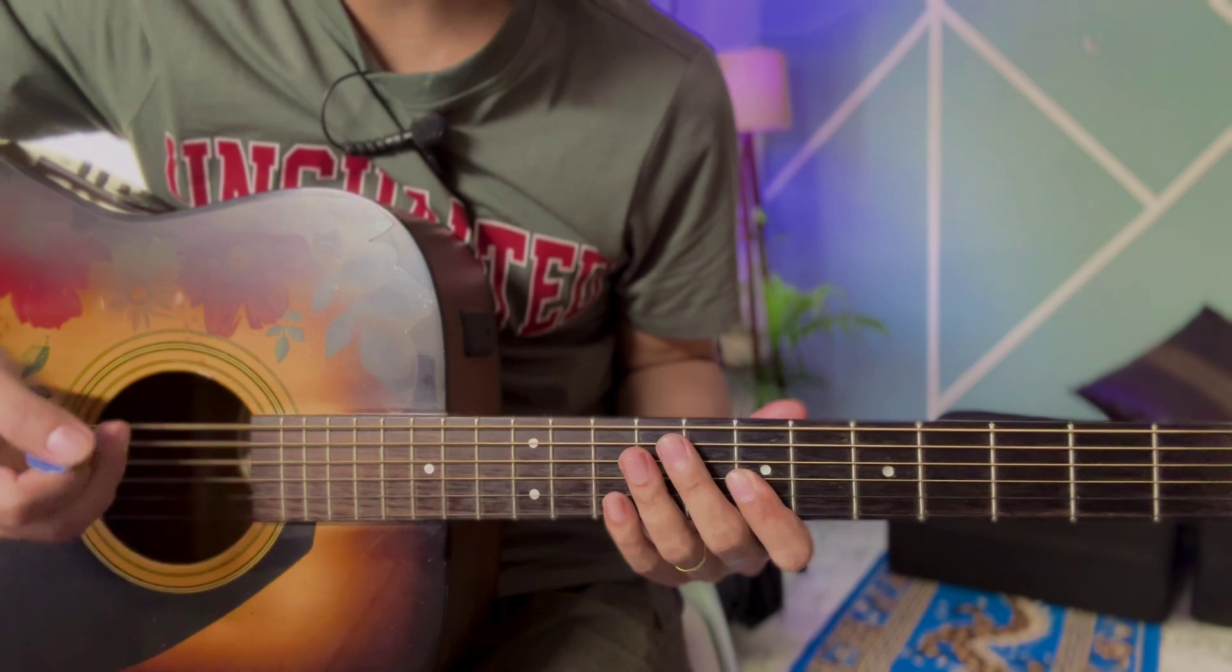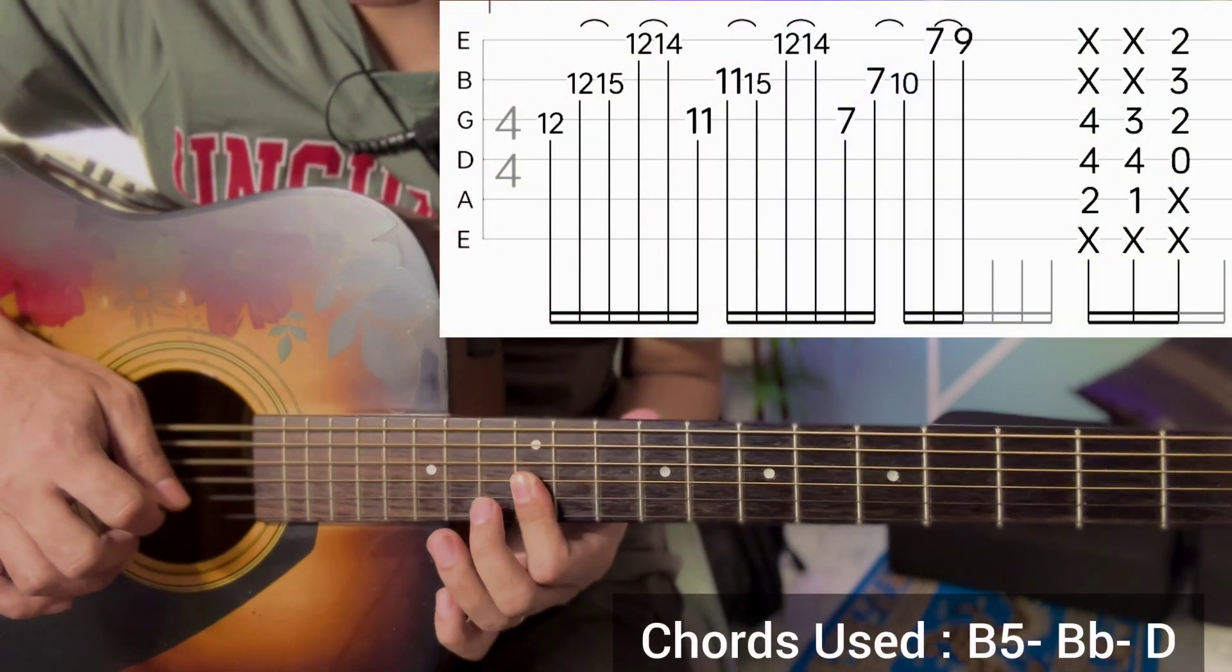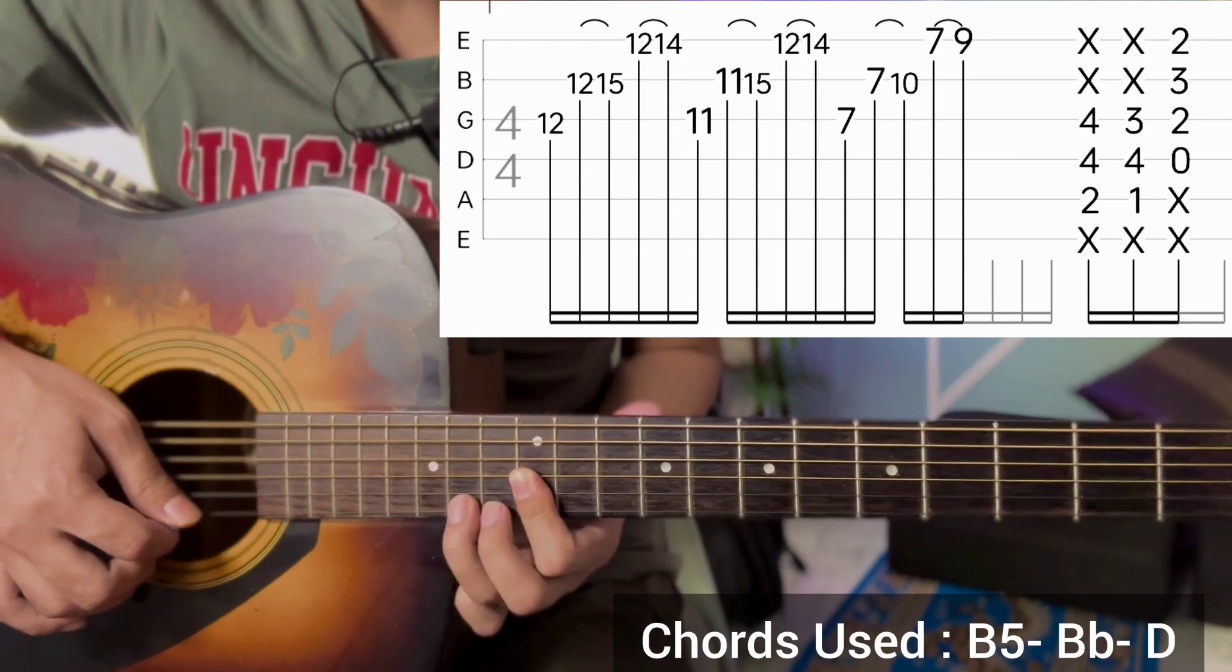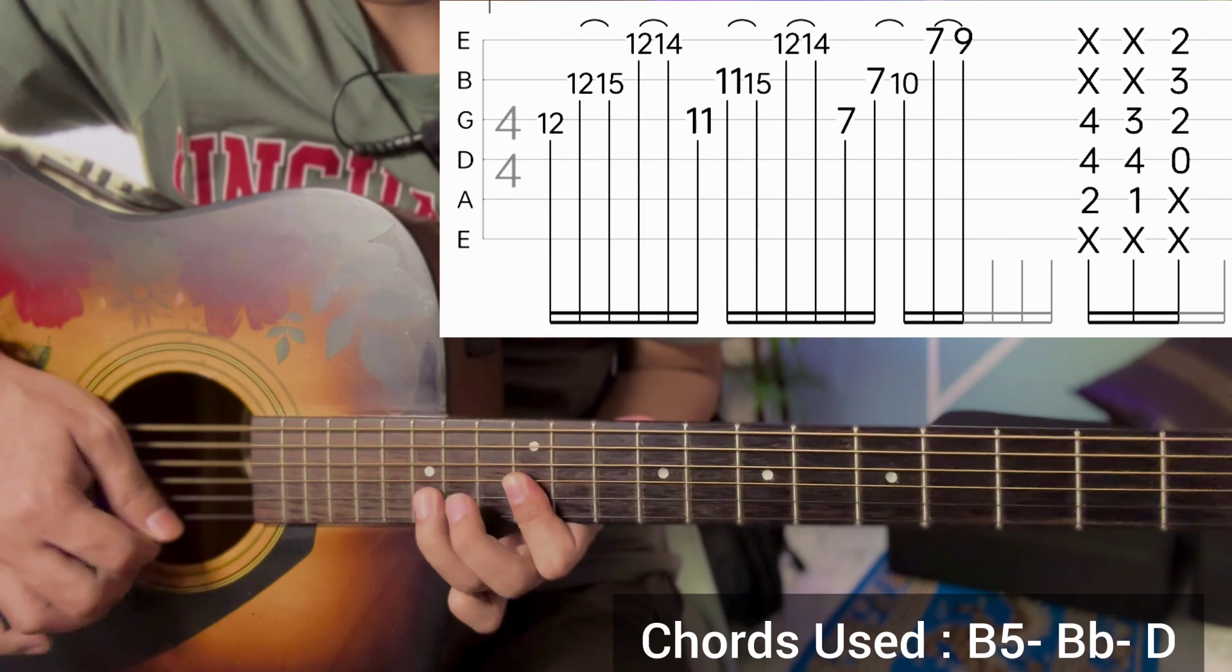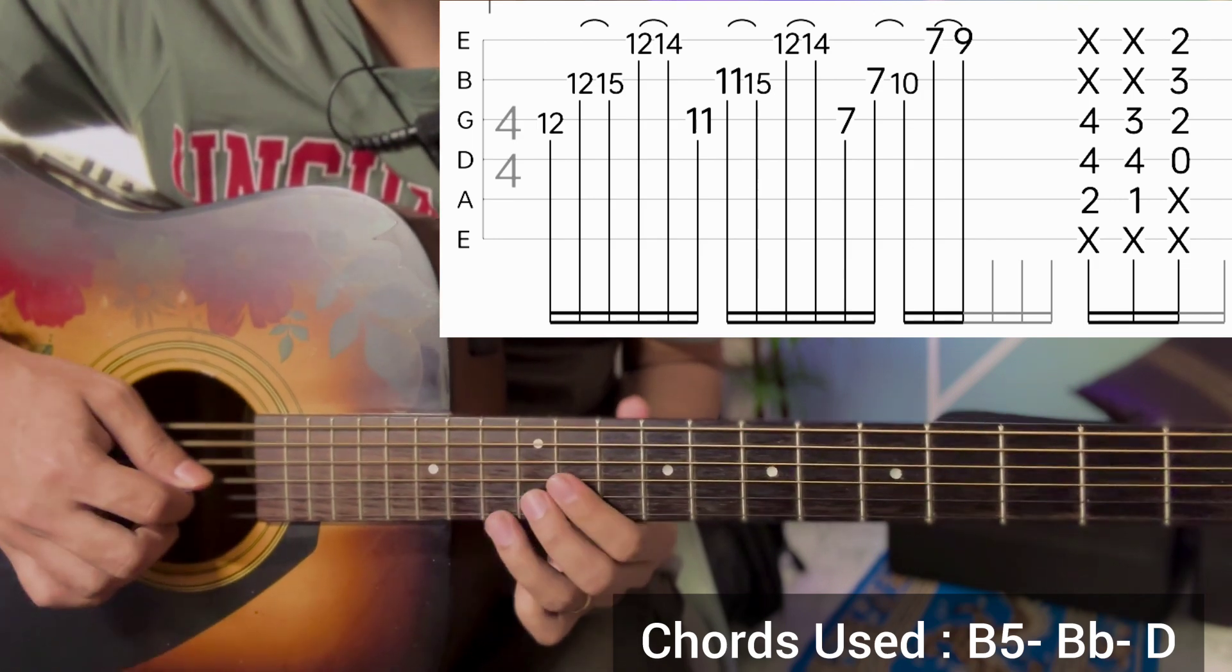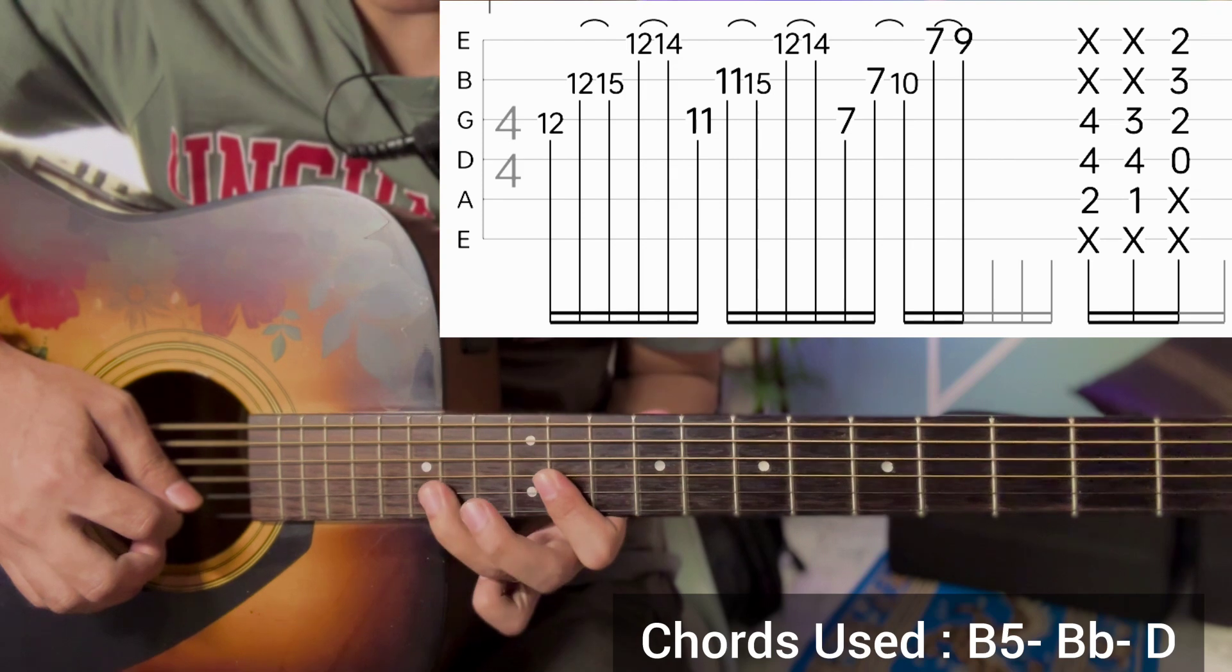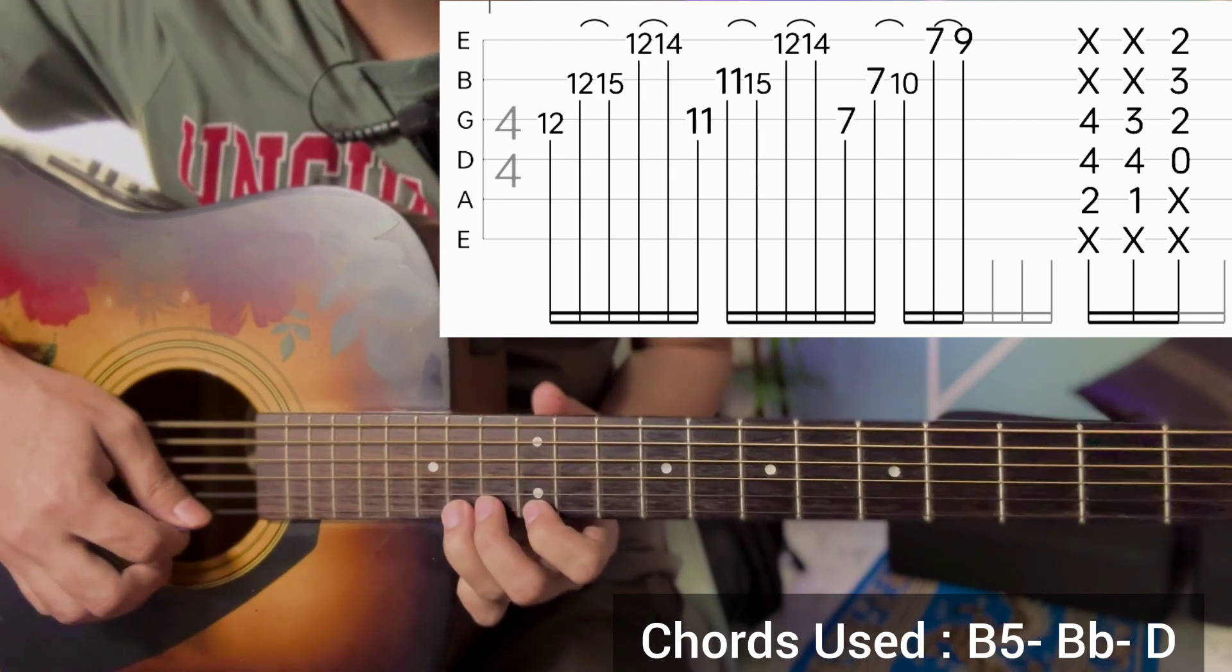Okay, so we start with the third string at 12, second string is 12-15 hammer on, first string is 12-14 hammer on. Same note, third string is 11, second string is 14-15 hammer on, first string is 12-14 hammer on.